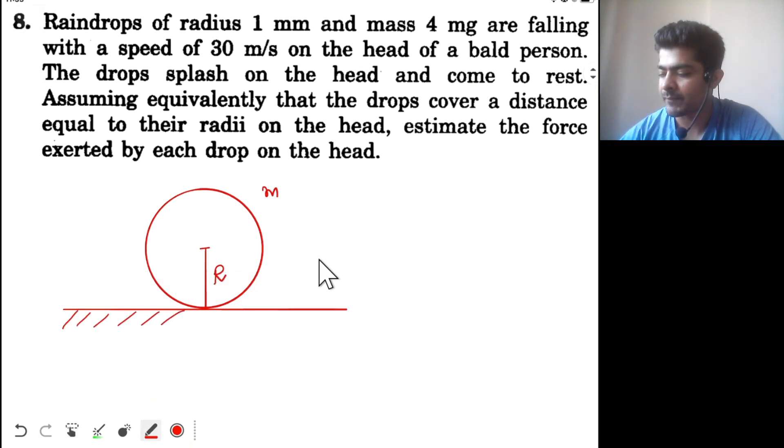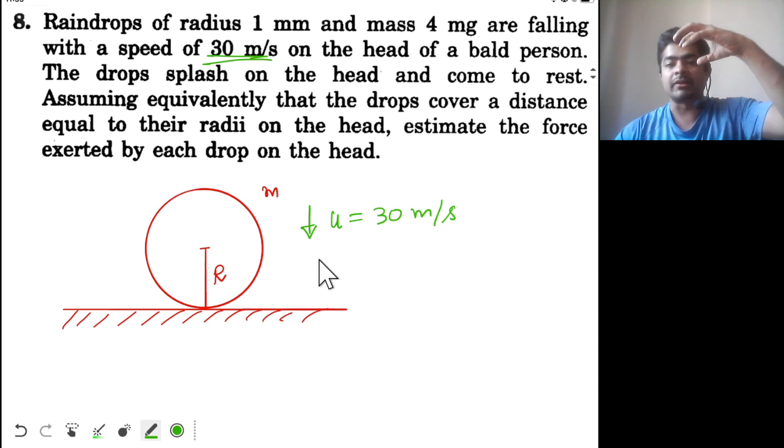The drop is coming with a speed of 30 meter per second, so we consider initial speed u equal to 30 meter per second. The drop decelerates and comes to rest.